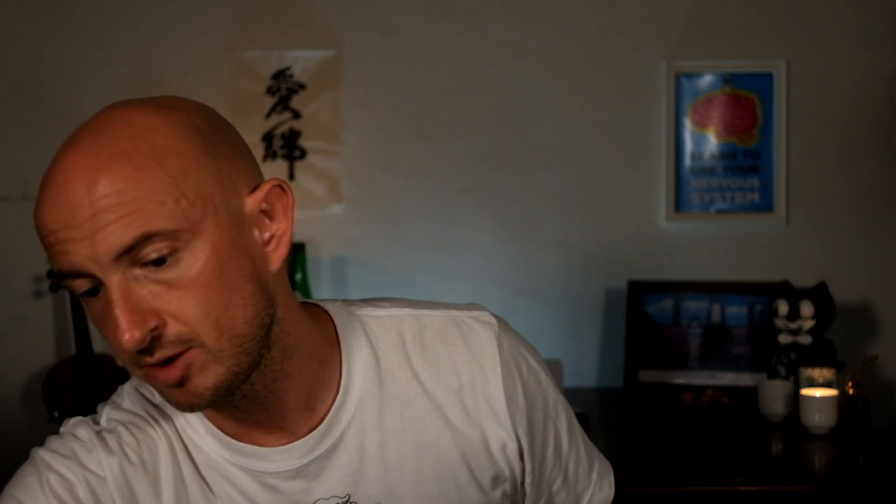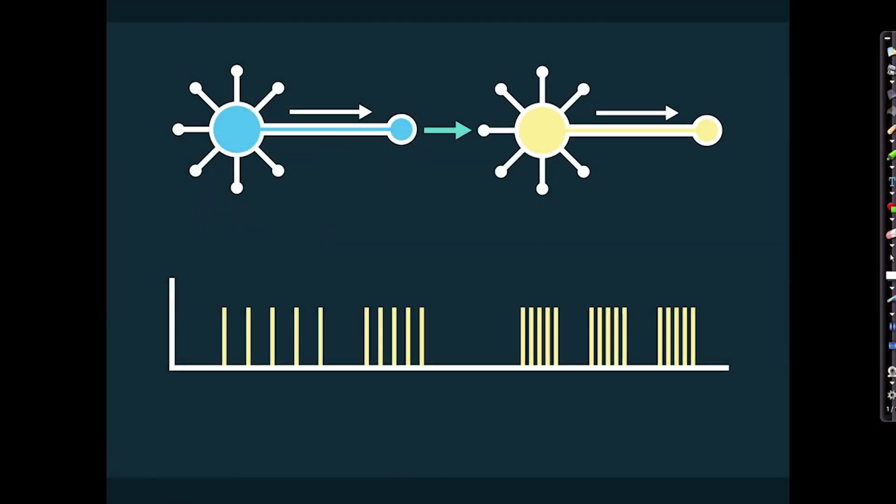So you've got all of this activity going on, all of these inputs, but it comes down to one fundamental decision. Does the neuron fire? Does it reach threshold potential and fire an action potential, which then obviously would pass to the next neuron? Or does the neuron remain quiet? So let's have a look at a diagram of two neurons that are speaking to each other in this manner.